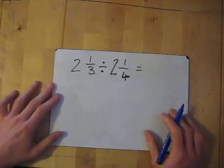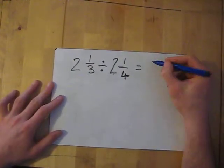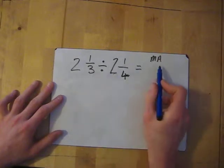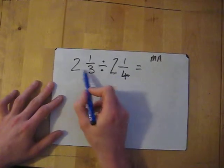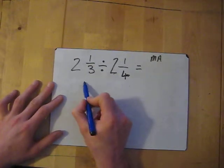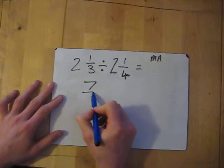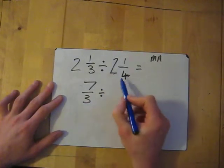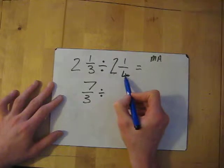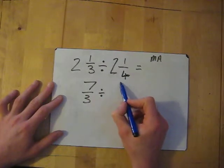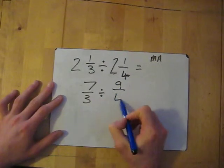Let's try another one. MA — we need to change to an improper fraction. Multiply and add: 2 times 3 gives me 6, add the 1 is 7, so 7 over 3. Divided by: 2 times 4 is 8, add the 1 is 9, so 9 over 4. Notice the denominator always stays the same.